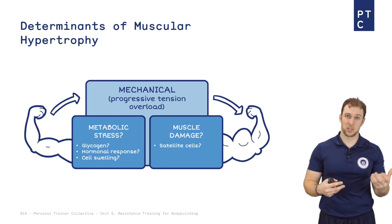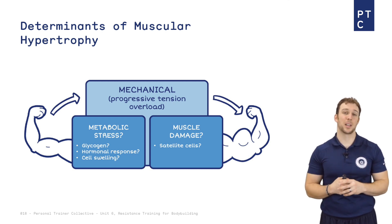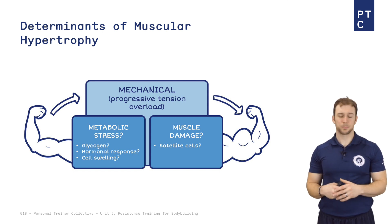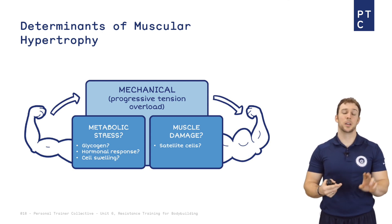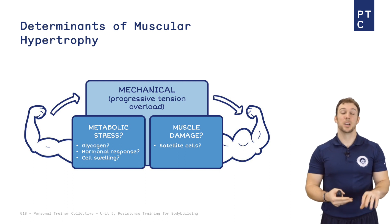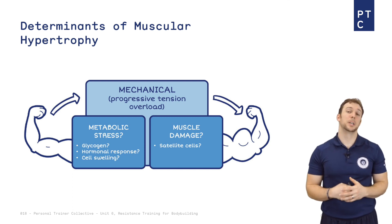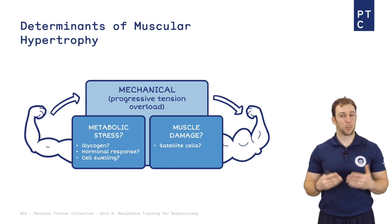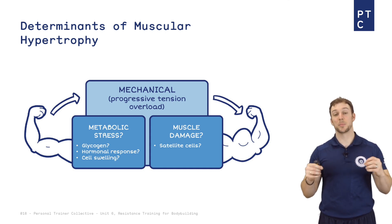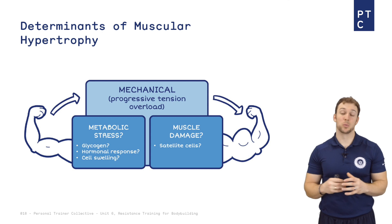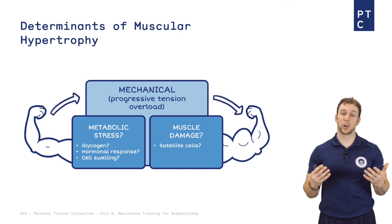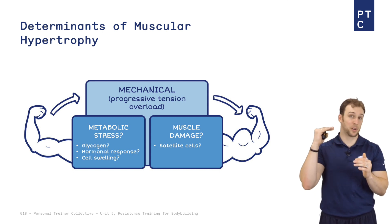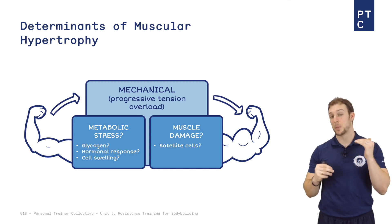This is why metabolic stress and muscle damage have question marks after them in this slide — they may play a role but probably don't play a primary role. Whether increases in glycogen content, the hormonal response to training, cell swelling from the pump, or satellite cell activation from muscle damage play a role is in question. They probably do, but remember they're always slaved to mechanical tension and progressive overload. So make sure that when you program, muscle damage and metabolic stress never come above mechanical tension.